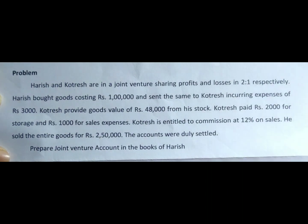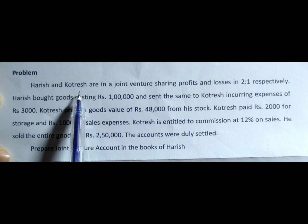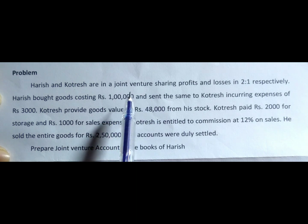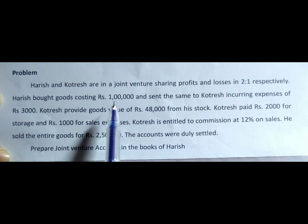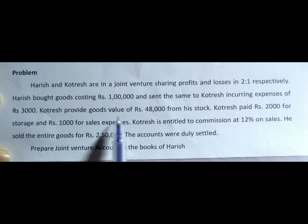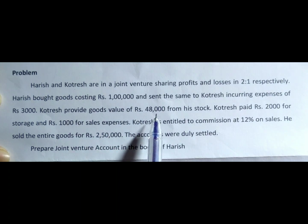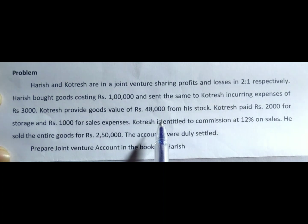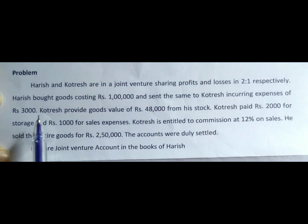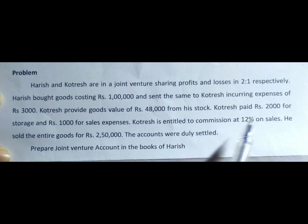In this problem, Harish and Kotresh are partners entered into a joint venture. Harish has bought goods costing Rs. 1 lakh. In similar way, Kotresh also provided goods valued at Rs. 48,000. Both partners have brought goods and incurred expenses. Harish has incurred Rs. 3,000, whereas Kotresh has incurred Rs. 2,000 for storage and Rs. 1,000 for sales expenses.